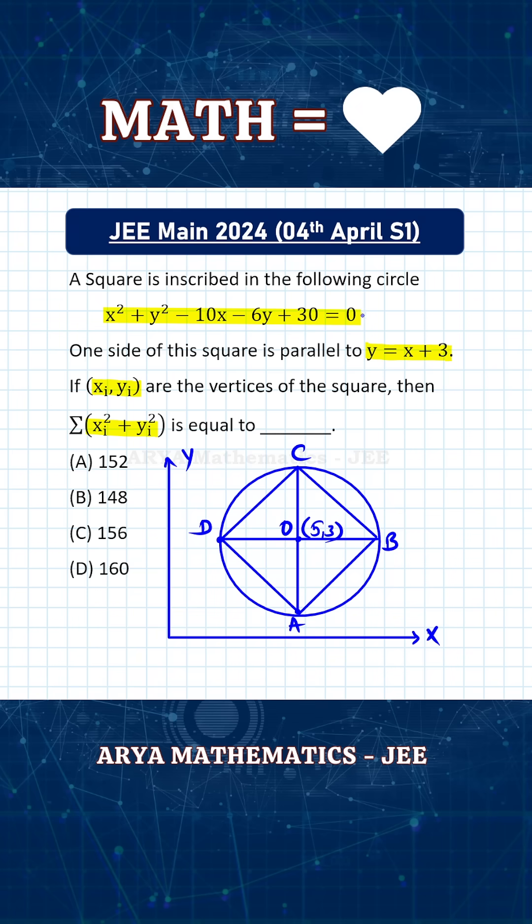For this circle, the center is at point O, which is (5, 3), and the radius of this circle is √(5² + 3² - 30) = 2 units. These are the center and radius of the circle.